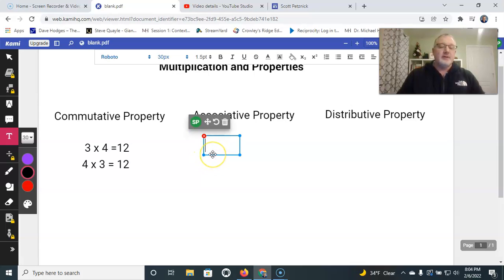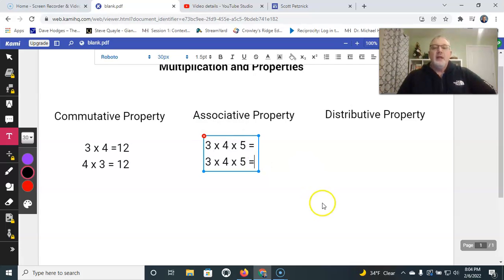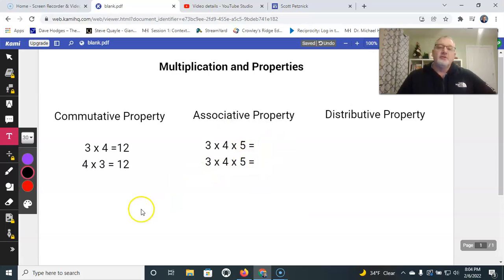Now the associative property, that is a little different. It just says that it doesn't matter which ones you do first, you're still going to get the same answer. So in this case, and again I'm not going to put, I'm just going to do the exact same thing. This one requires parentheses.